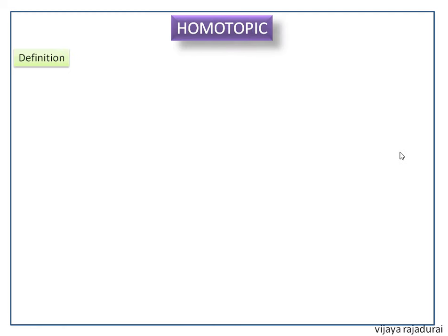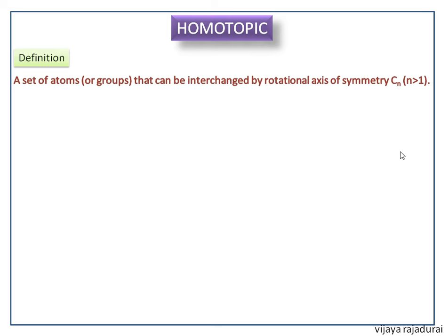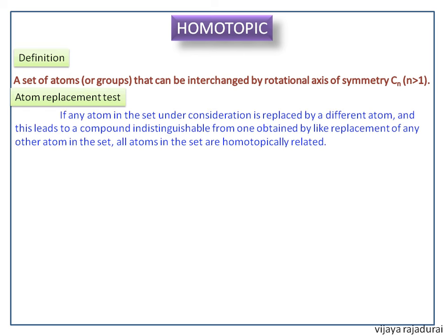Homotopic is defined as a set of atoms or groups that can be interchanged by a rotational axis of symmetry. Atom replacement test: if any atom in the set under consideration is replaced by a different atom and this leads to a compound indistinguishable from one obtained by like replacement of any other atom in the set, all atoms in the set are homotopically related.